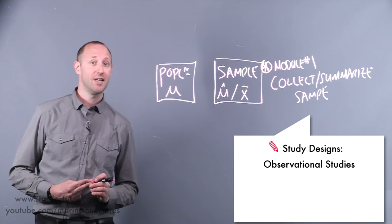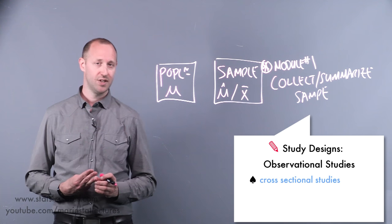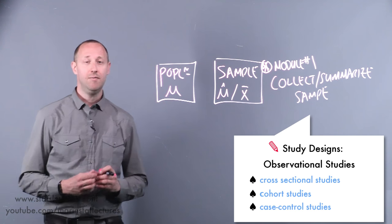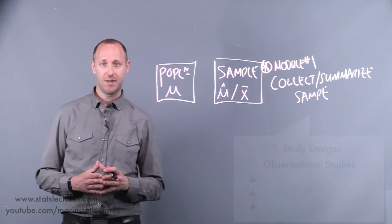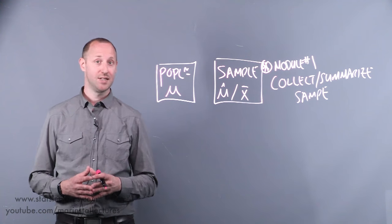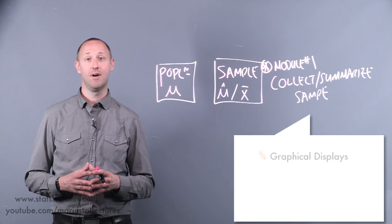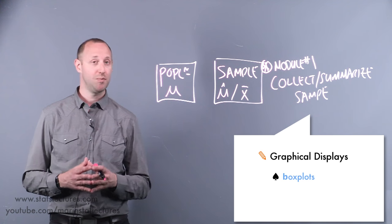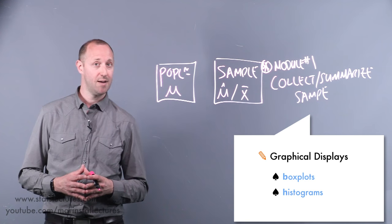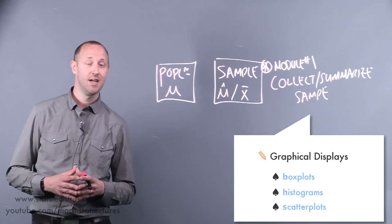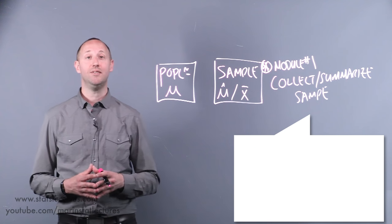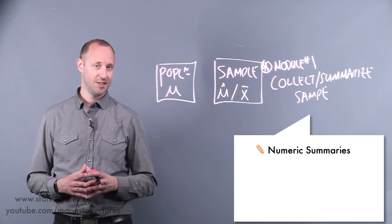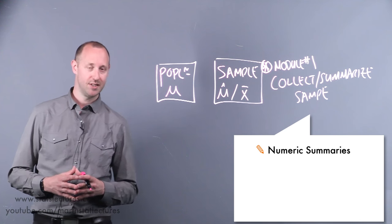In observational settings, we cover things like cross-sectional studies, cohorts, or case controls. Once we have some data, we'll talk about different ways of summarizing it — first graphically, with different plots like box plots, histograms, and scatter plots, as well as numeric summaries, often called descriptive statistics or summary statistics.